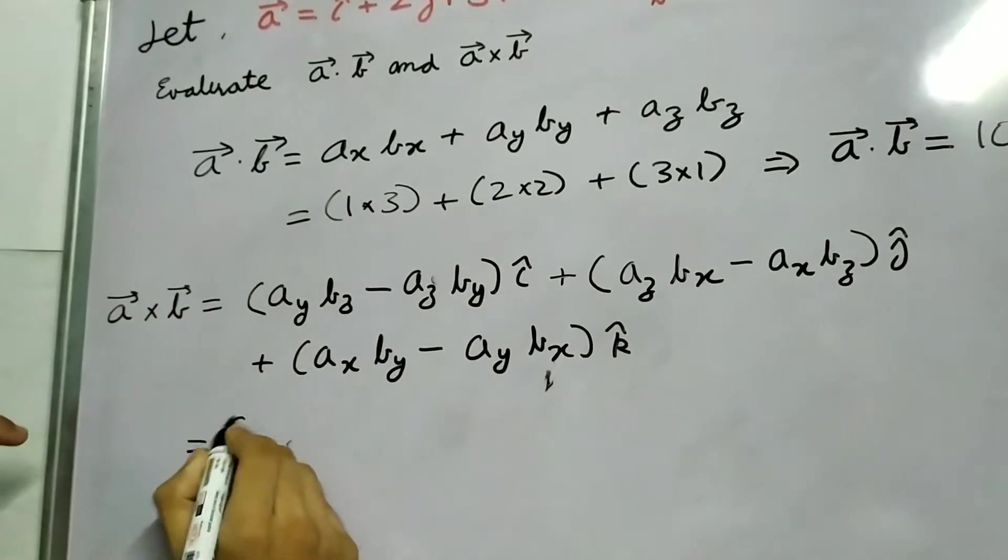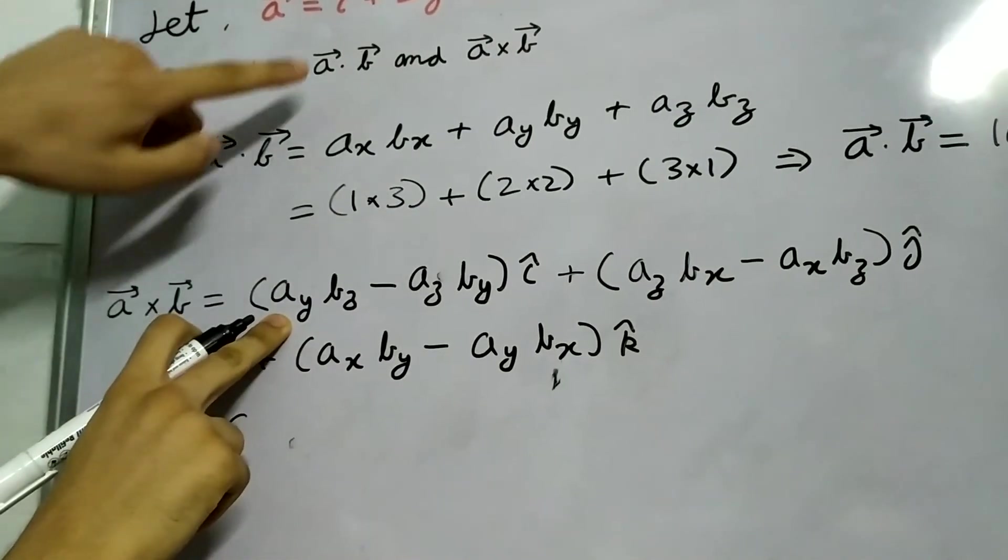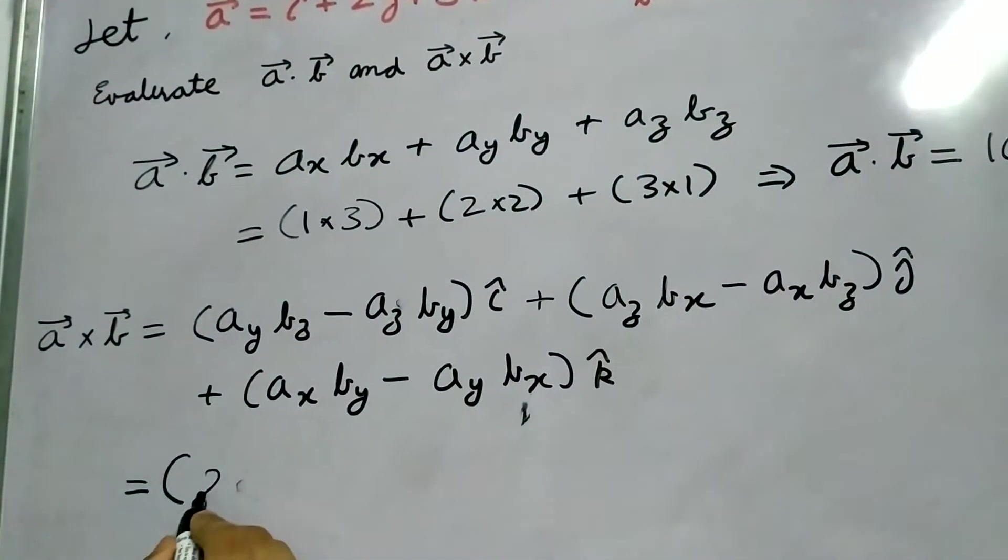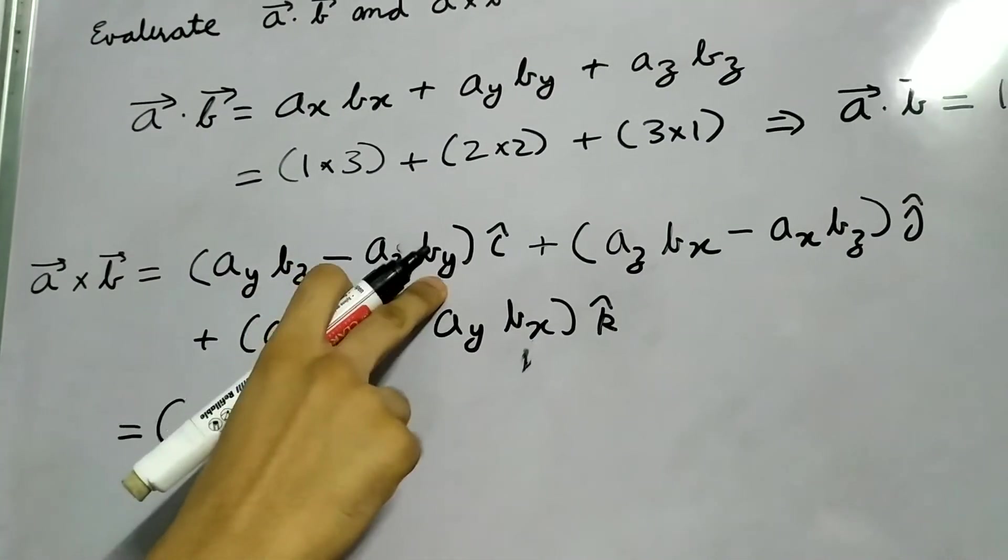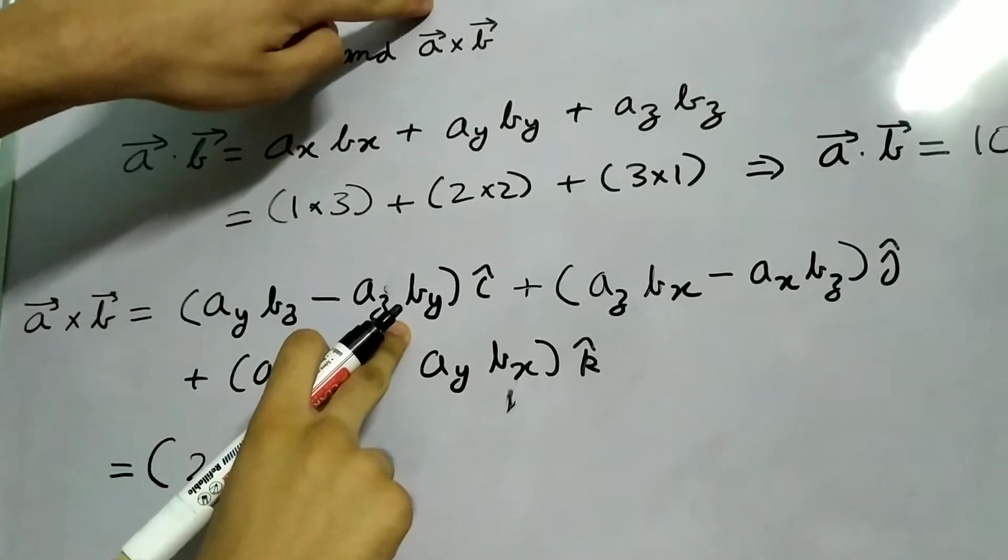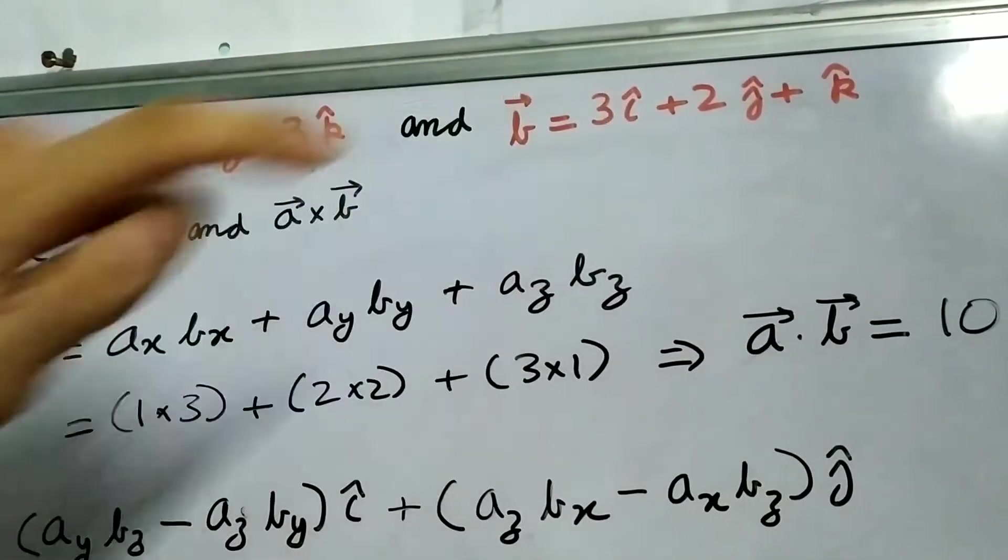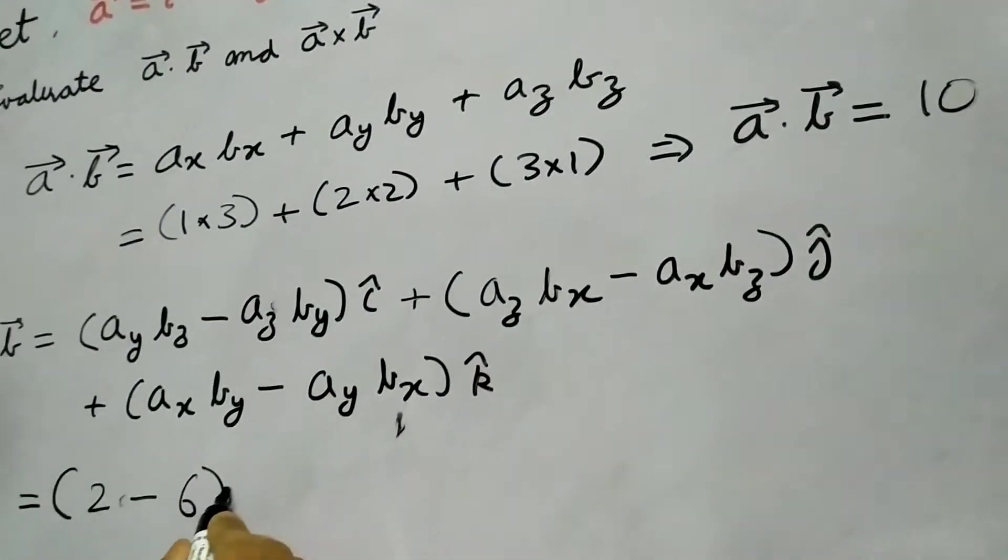So A_y is 2 times B_z which is 1, this is 2 minus A_z B_y. A_z is 3, B_y is 2, so this will be 3 into 2 which is 6. So 2 minus 6, i cap.